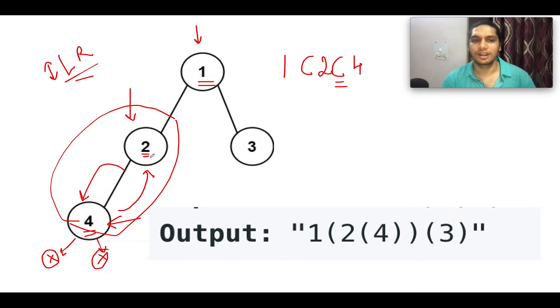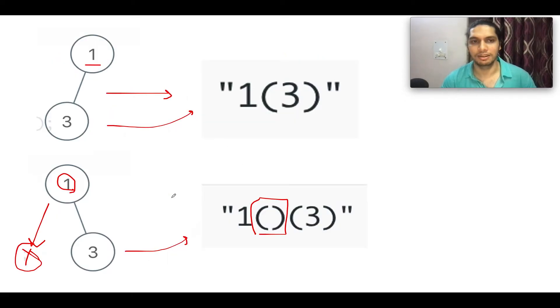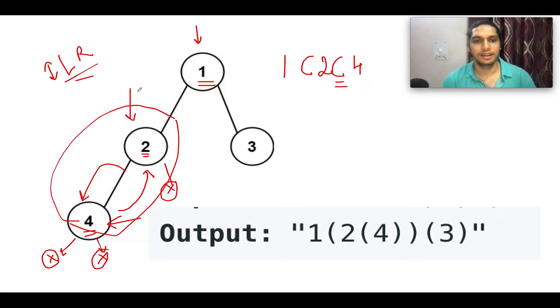Now we will be moving backwards. Let's move backwards. Now what do we see? We see that 2 doesn't have a right child, it is null. So whenever you see such a case, the null value should not be appended in the final result. Remember this test case - null value should not be added in the final result.